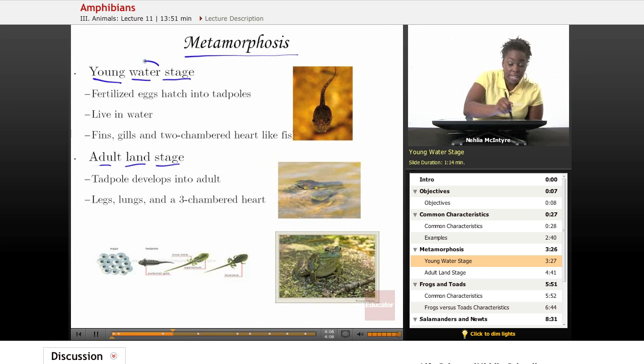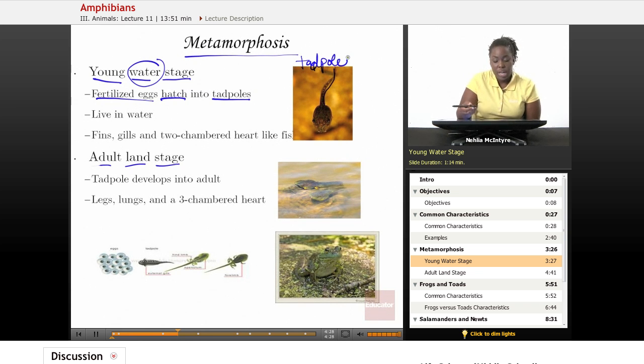When they're young, they live in water. The eggs of amphibians, the fertilized eggs, actually hatch in water, and they start out as what we call tadpoles, or these tiny little larvae that are able to swim. Here's a tadpole. And they have very similar structures, similar to a fish. For example, they live in water, they have fins, gills, and just like fish, they have a two-chambered heart.